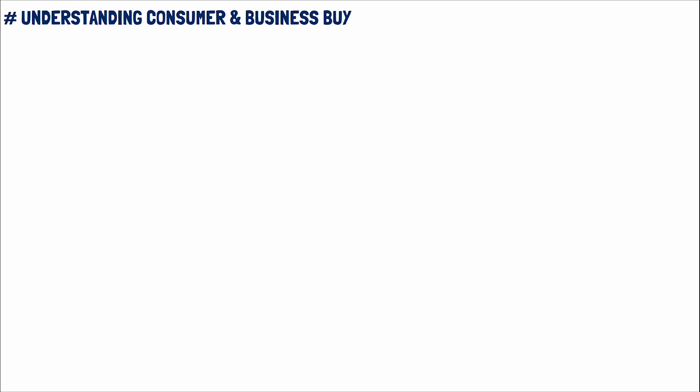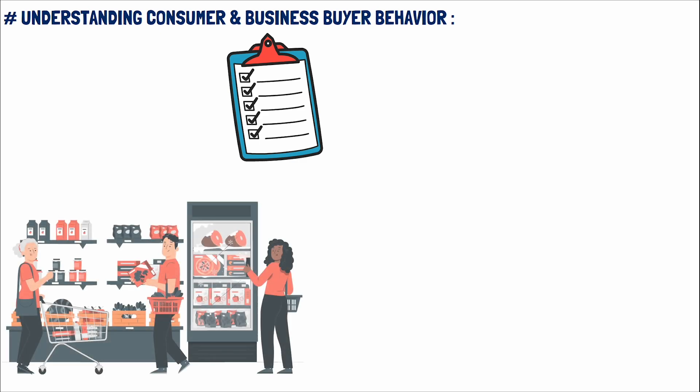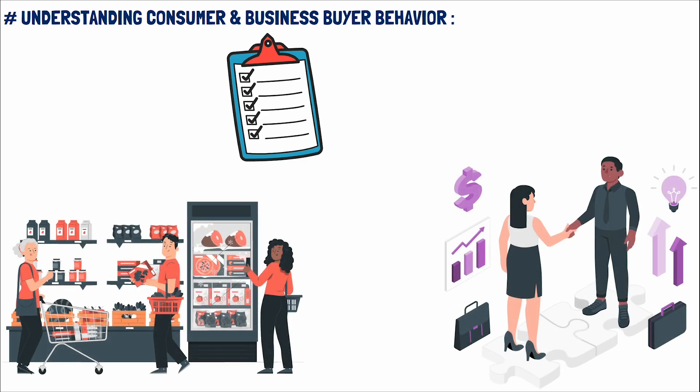Understanding Consumer and Business Buyer Behavior. Welcome to the fascinating exploration of the forces and factors that shape the buying behavior of consumers and businesses. As we delve into this chapter, we'll uncover not just how purchases are made, but also why they are made, taking into account a variety of influences from the psychological to the strategic. Let's begin with consumer buying behavior, which can be envisioned as a marketplace dance, choreographed by the four Ps: product, price, place, and promotion.